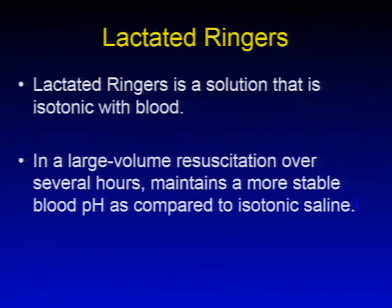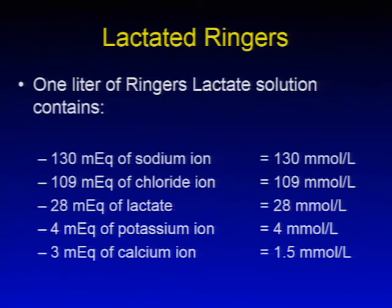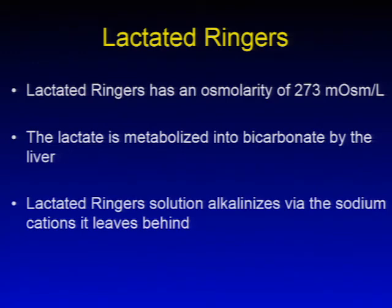Lactated ringers is a solution that is isotonic with blood. In large volume resuscitation over several hours, lactated ringers maintains a more stable blood pH compared to isotonic saline. One liter of lactated ringers contains 130 milliequivalents of sodium, 109 milliequivalents of chloride, 28 milliequivalents of lactate, 4 milliequivalents of potassium, and 3 milliequivalents of calcium. It has an osmolarity of 273 milliosmoles per liter. The lactate is metabolized into bicarbonate by the liver, and lactated ringers alkalizes via the sodium cations it leaves behind.